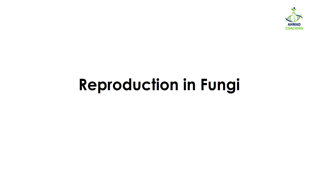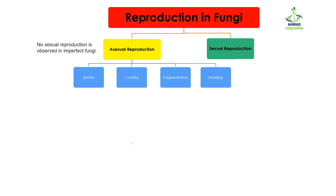Welcome to Ahmed Coaching. I'm your teacher, Dr. Anam. Today we are going to study about reproduction in fungi. There are two types of reproduction that take place in fungi: one is asexual reproduction, while the other one is sexual reproduction. Asexual reproduction is found in all fungi; however, sexual reproduction is not found in imperfect fungi, which is also known as Deuteromycota.